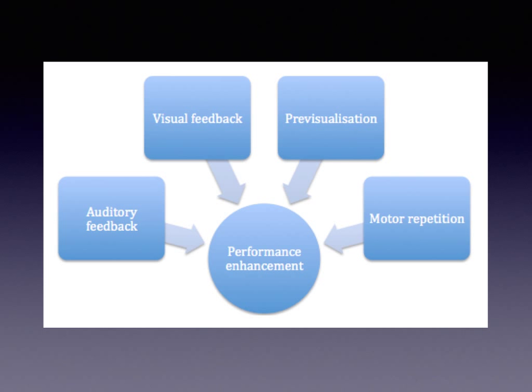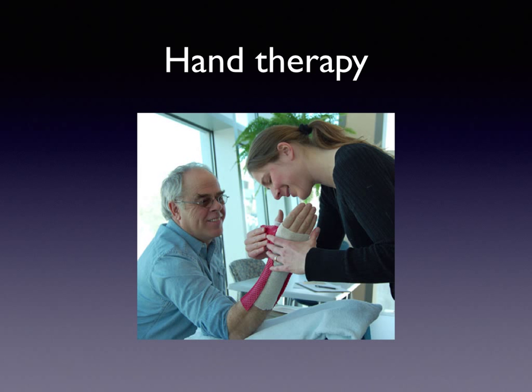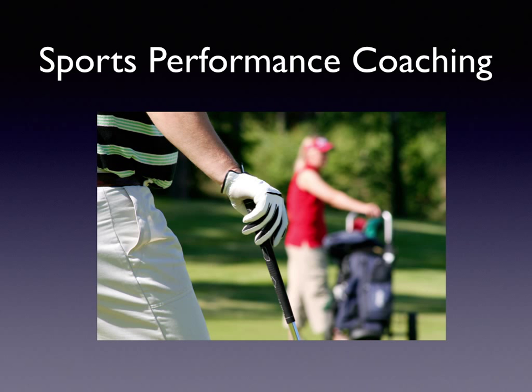We use a number of modalities to achieve performance enhancement: auditory feedback — just think of a sporting coach telling someone how they're doing; visual feedback — the process of pre-visualisation or thinking about movements one is going to undertake; and motor repetition. All these come together to give performance enhancement. We use this in hand therapy — the hand therapist works with an injured patient, telling him to undertake his movements, showing him what to do, asking him to repeat it, and giving him positive reinforcement.